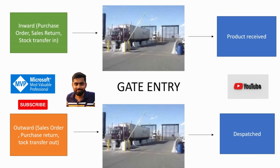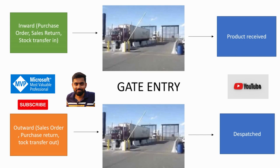In these two cases, when we are receiving the purchase order or the supplier is sending the material by car or truck, those will be passed by our gate — maybe an exit gate at the time of dispatch or entry gate at the time of inward purchase order. For those cases, a factory or organization wants to maintain a gate register entry: when the truck arrived, the truck number, driver name, driver number, challan number — all these things can be maintained in D365 Finance & Operations.